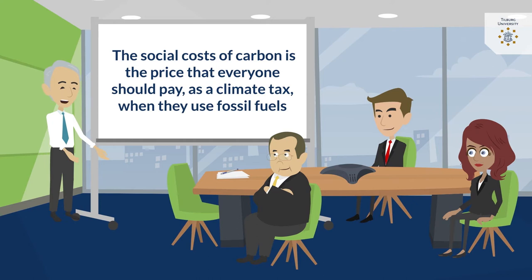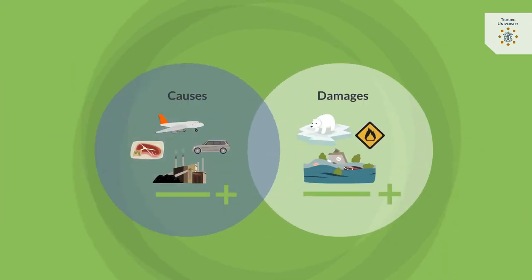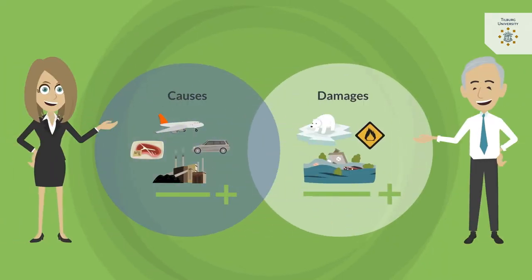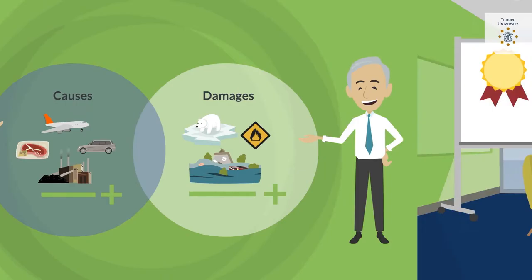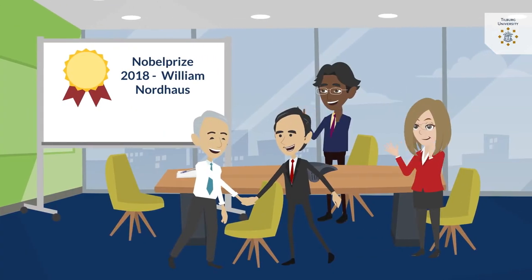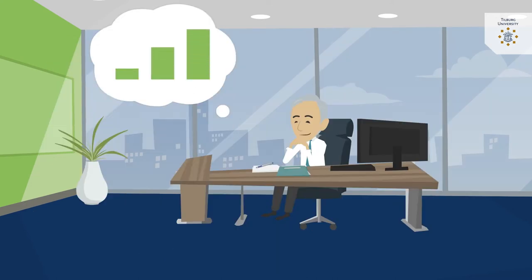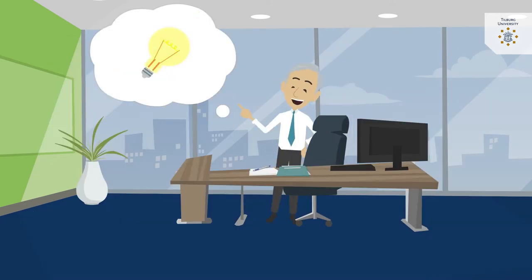Economists say that this is the price that everyone should pay as a climate tax when they use fossil fuels. To put the theory into practice, economists develop models that do all the calculations. So important are these models that the Nobel Committee awarded the prize in 2018 to William Nordhaus, one of the first economists who did the calculations. How did he go about it?